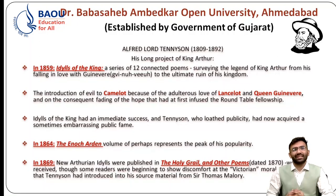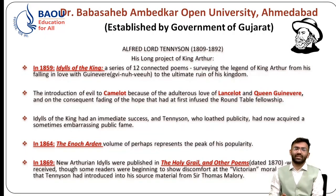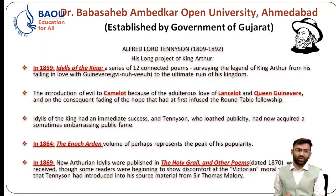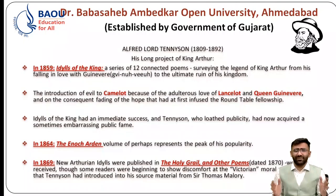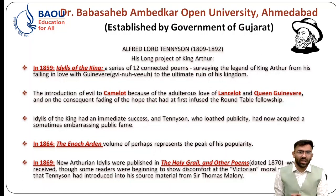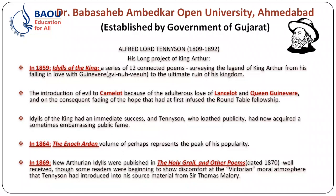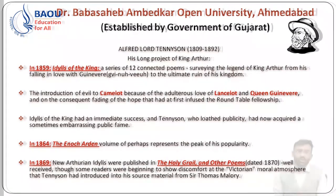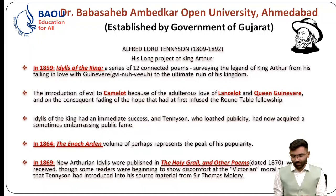In 1864, he published 'Enoch Arden,' a volume that perhaps represents the peak of his popularity. In 1869, new Arthurian 'Idylls' were published in 'The Holy Grail and Other Poems,' dated 1870. These poems were well received, though some readers were beginning to show discomfort at Victorian moral issues. Tennyson was indeed much liberal — even his father-in-law had not accepted his proposal to Emily because of his liberal views — and the Victorian moral audience began questioning his positions.